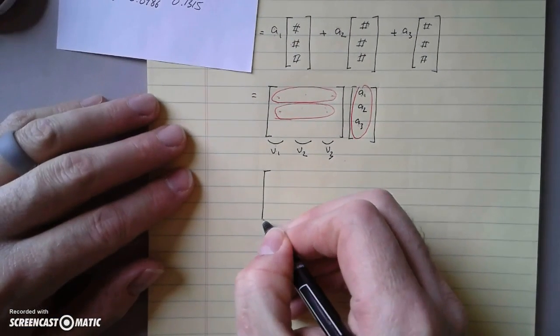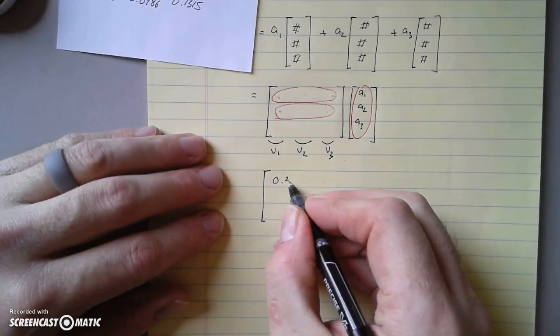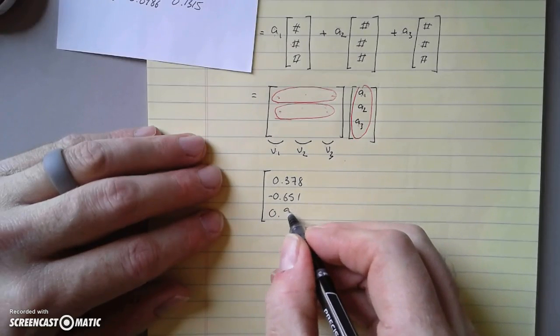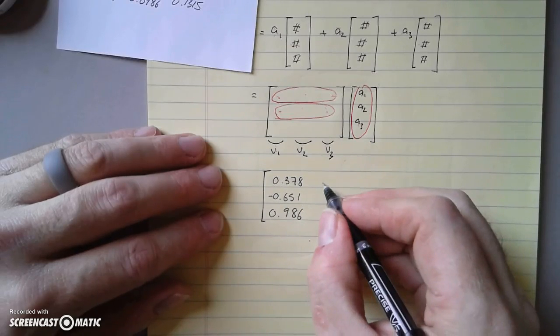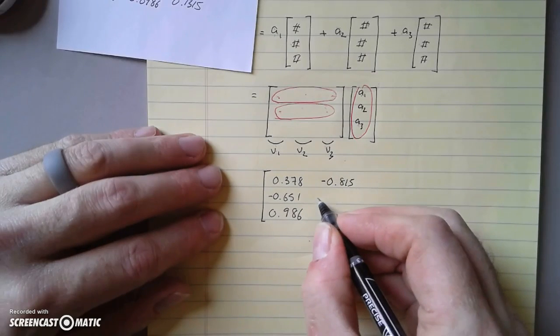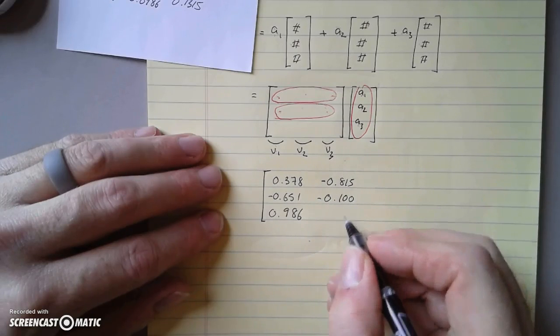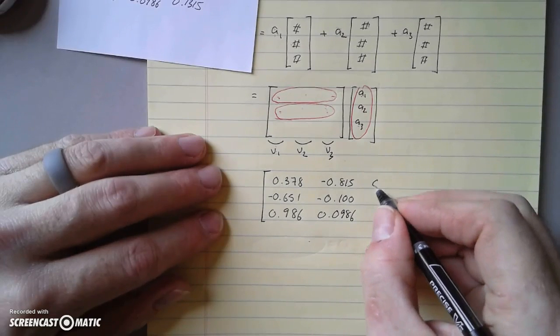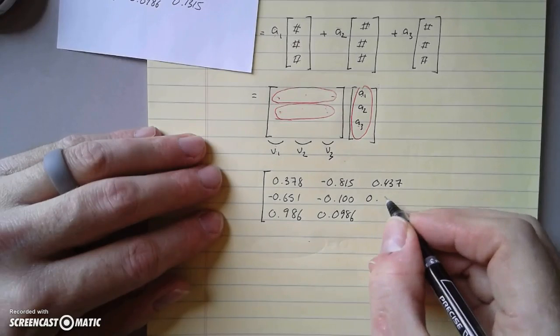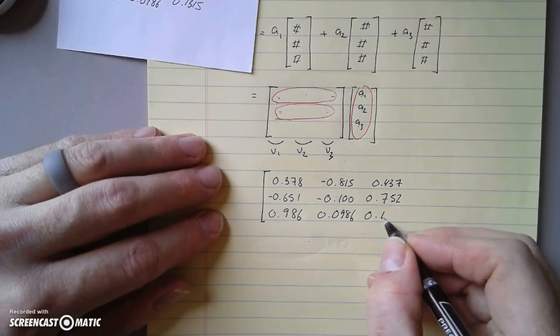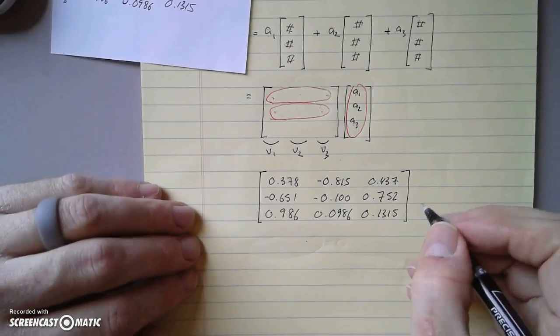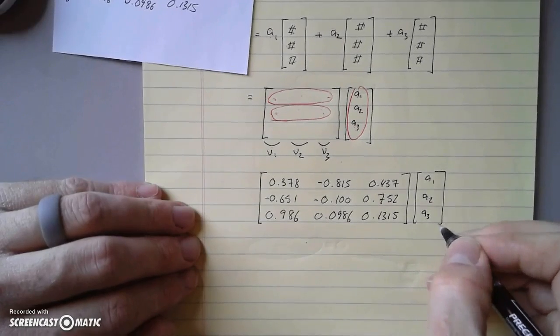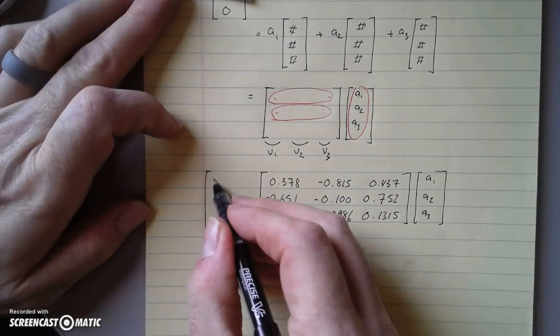I'll write it out in case you're following along. Here would be 0.378, negative 0.651, 0.986 in the first row; negative 0.8, 0.815, negative 0.0986 in the second; 0.437, 0.752, 0.135 in the third. This is the matrix times [a1, a2, a3] that equals the initial condition.